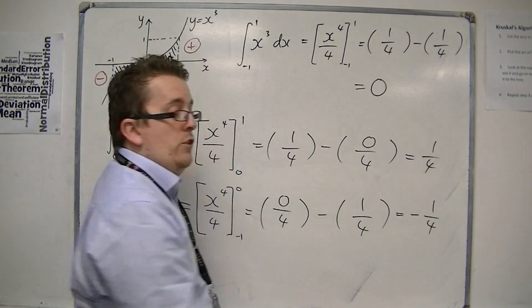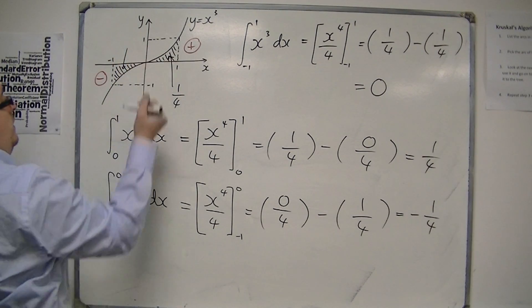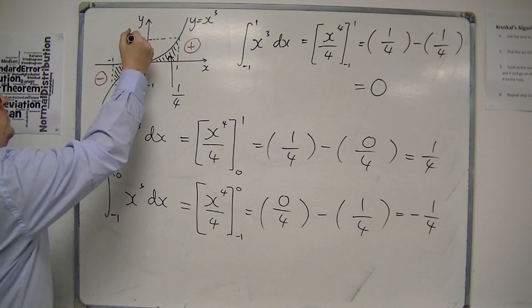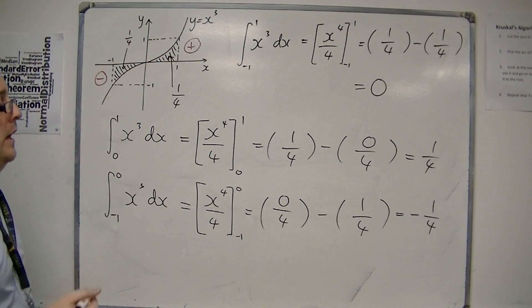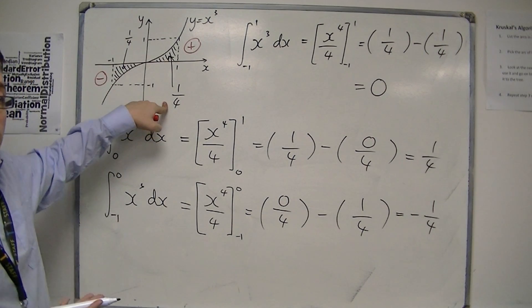So you can see when I add them together, I would get 0. So the integral is minus 1 quarter, but the area is 1 quarter. And so the whole area is actually 1 half, 1 quarter plus 1 quarter.